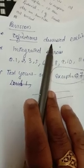Now some homework also there, you have to do the homework. We have to start revision. Definitions you have to study. Integrated exercise: question number 1, 2, 3, 5, 6, 7, 8, 9, 10, 11, these question numbers you have to solve in your copy. Do it yourself, test yourself. Except question number 4, all questions you have to do in your copy.